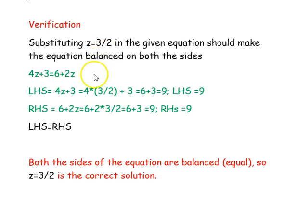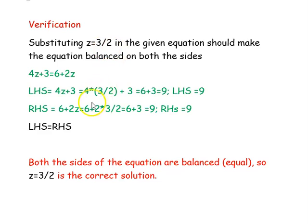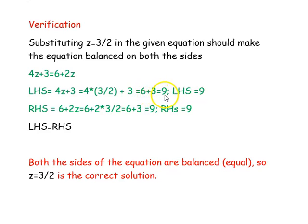Let us verify our answer by substituting in the left hand side and right hand side of the given equation. Taking the left hand side: 4z plus 3. Instead of z we substitute 3 by 2, so 4 into 3 by 2 plus 3. The 2s cancel giving 2 into 3, that is 6 plus 3, which is 9. So our left hand side is 9.